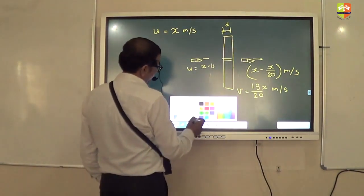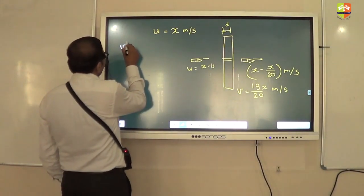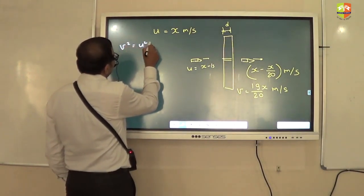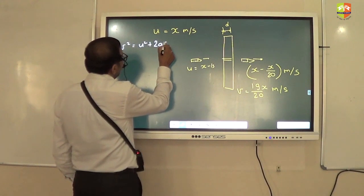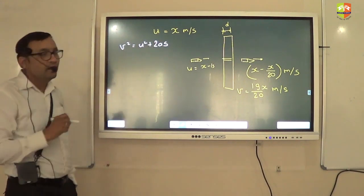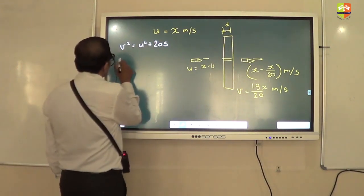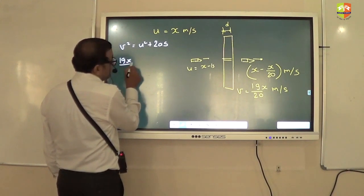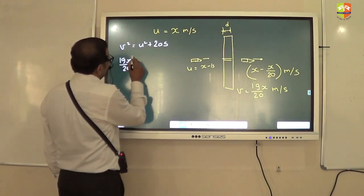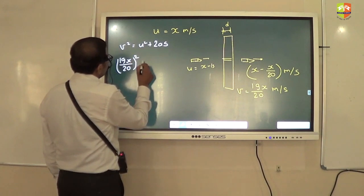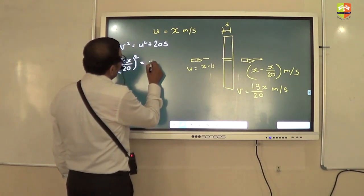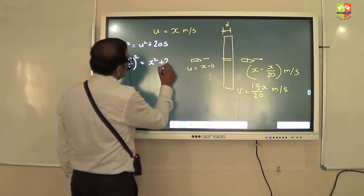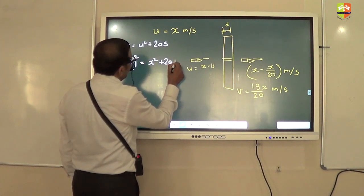Okay. Let me solve this. Which equation are you using? V square is equal to u square plus 2ax. Okay? V is how much? 19x by 20. Okay? This square, u is x plus 2a into d. Right?